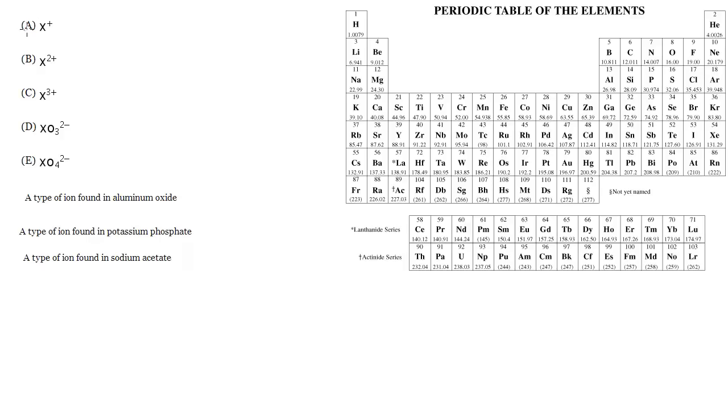Got another set here. In our choices we have ions of various kinds and let's look at the questions. A type of ion found in aluminum oxide.